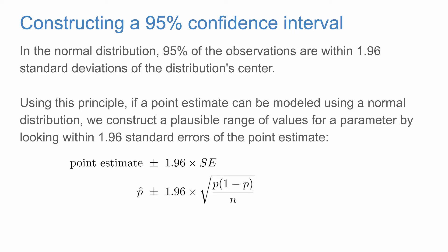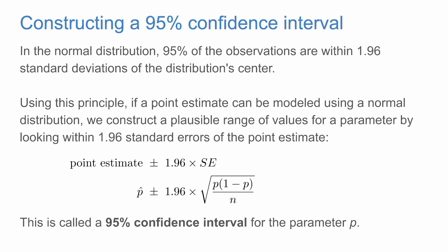So our general formula is point estimate plus minus 1.96 times the standard error. For the proportion context, that's the sample proportion plus minus 1.96 times the formula for the standard error for a sample proportion. This is called a 95% confidence interval for the parameter p.